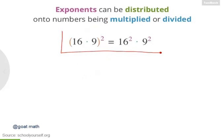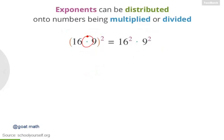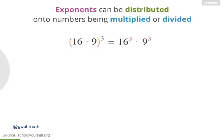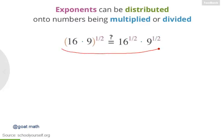Let's take a closer look at this equation. As long as you're multiplying or dividing the numbers inside the parentheses, this equation is true for any exponent, like 2, 3, and 4. But what if the exponent is 1 half? Is this equation still true? Let's find out.